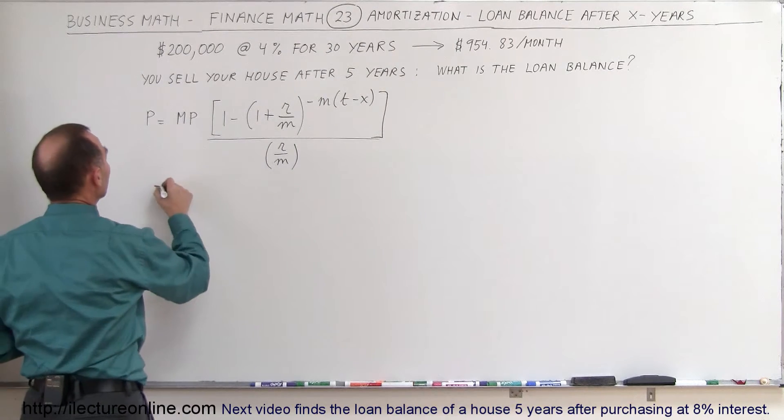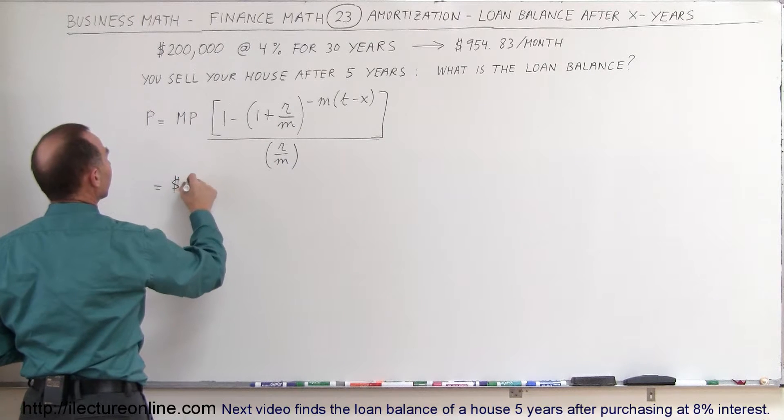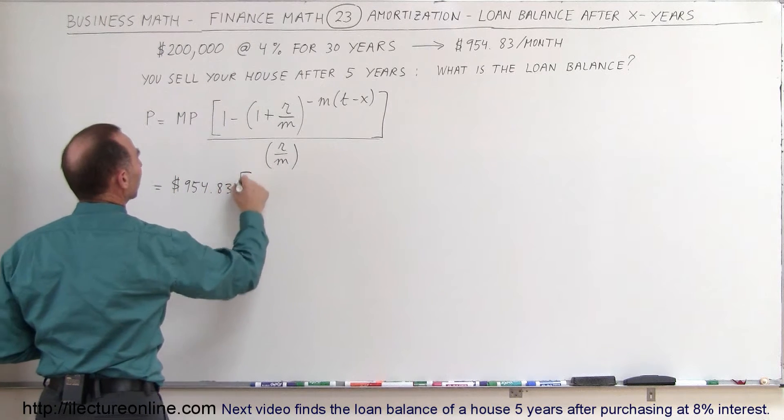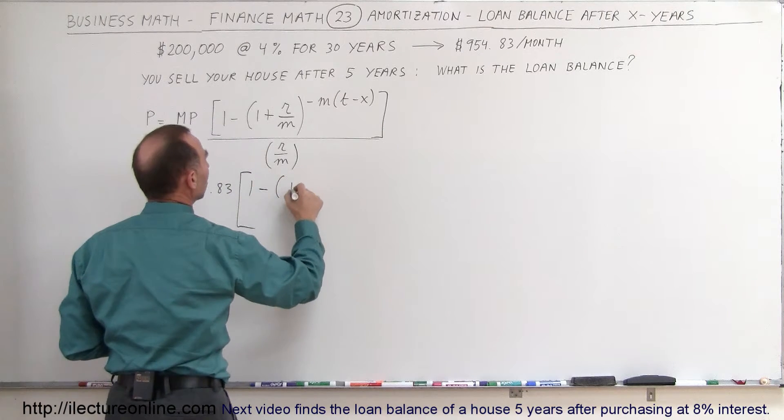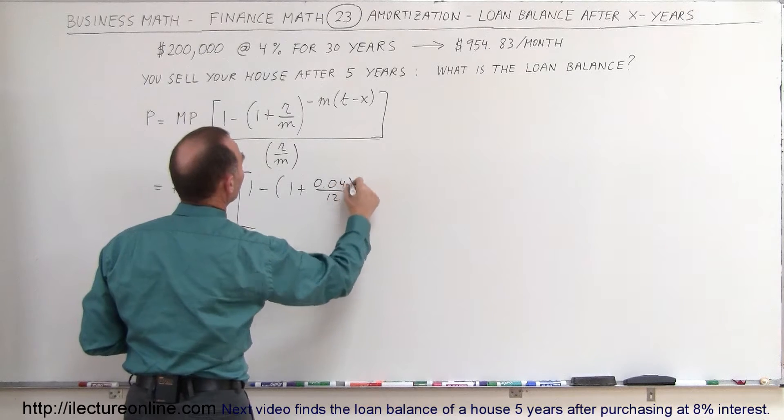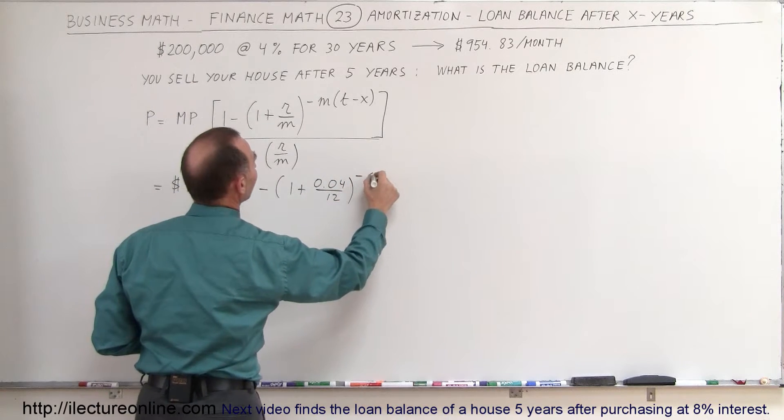And so that would be equal to the monthly payment, which we determined to be $954.83, multiply times 1 minus (1 plus the rate, 0.04, divided by 12 payments per year) raised to the minus M.